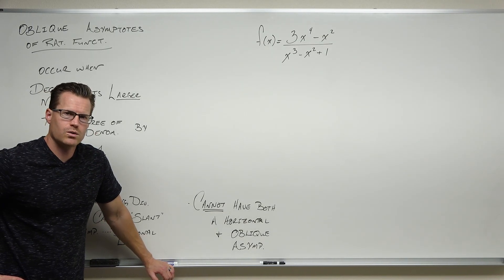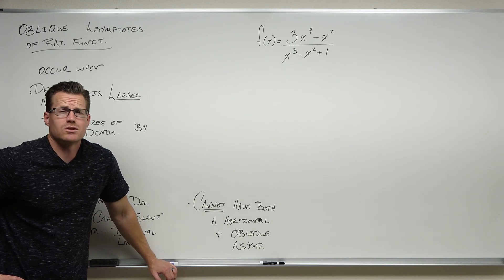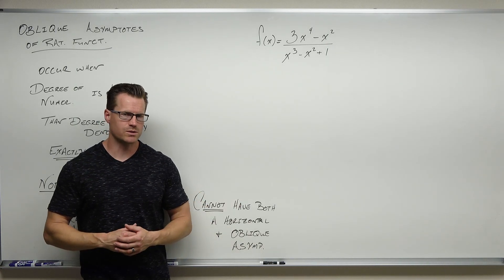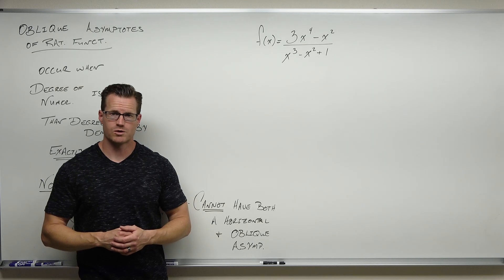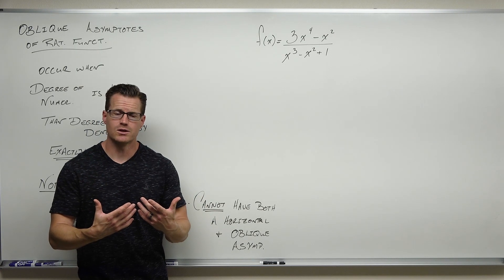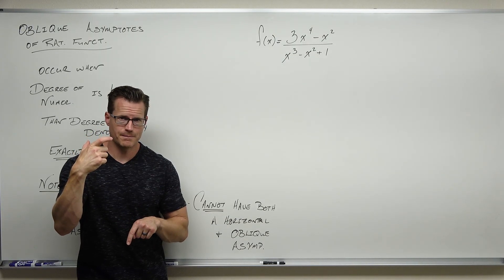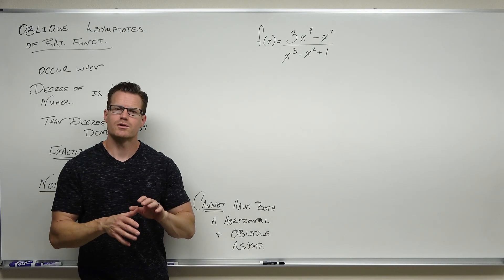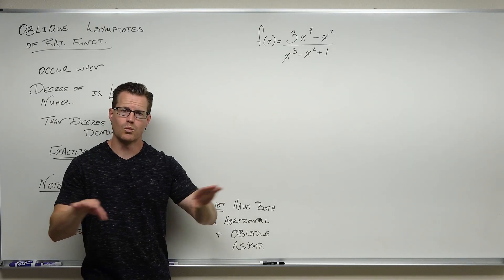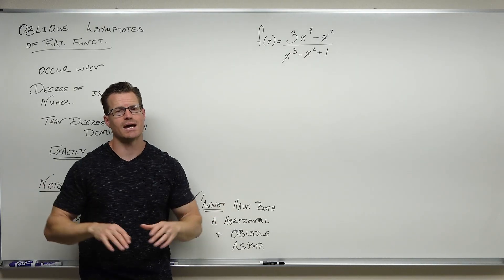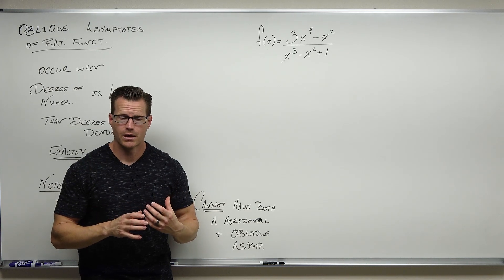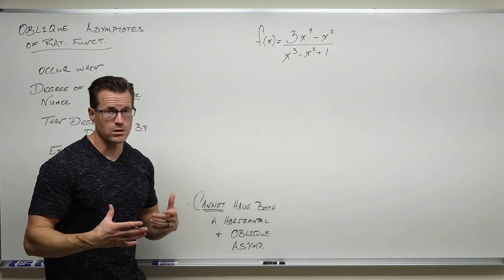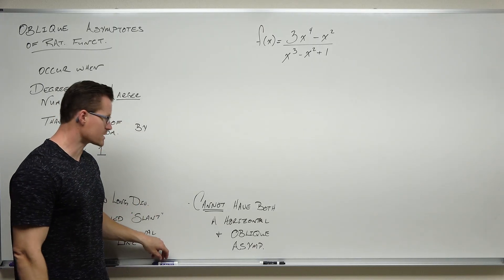You can't have both a horizontal and an oblique. Think about just the degrees: if your degrees are equal, you have horizontal. If the degree of the denominator is bigger, you have horizontal at y equals zero. If the degree of the numerator is larger by one, you have oblique. You can't have a numerator with a larger degree and at the same time have equal or denominator-larger — that's a contradiction. So you can't have both; it is one or the other or none, and then you just have end behavior. You fall into one of three cases: horizontal, oblique, or straight-up end behavior.